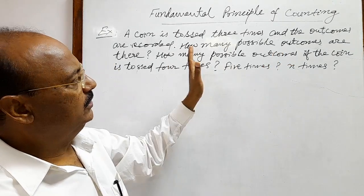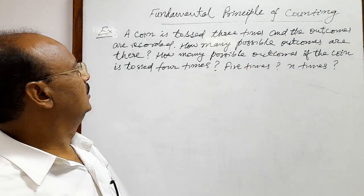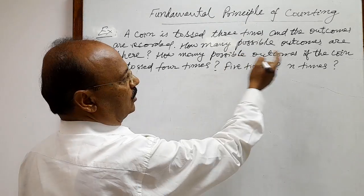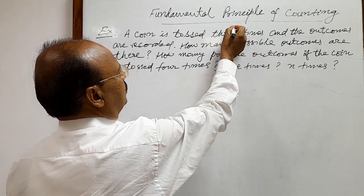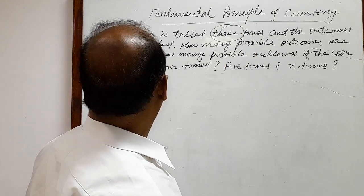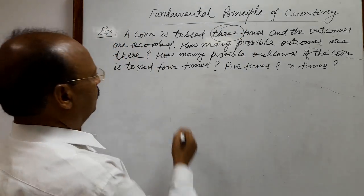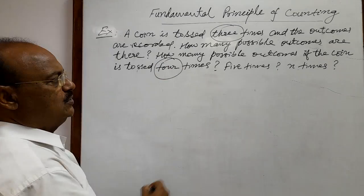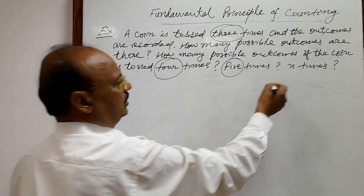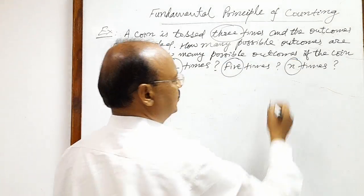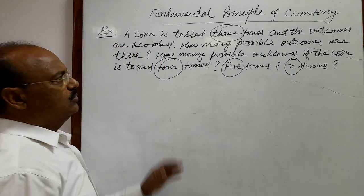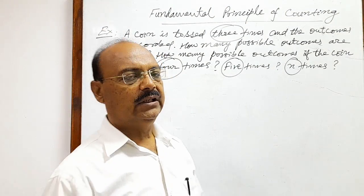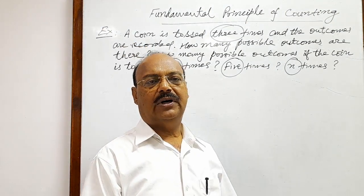So there are different parts of this question. The first part is coin is tossed three times, the second part is coin is tossed four times, again five times, then n times. In each case we have to calculate the number of outcomes.